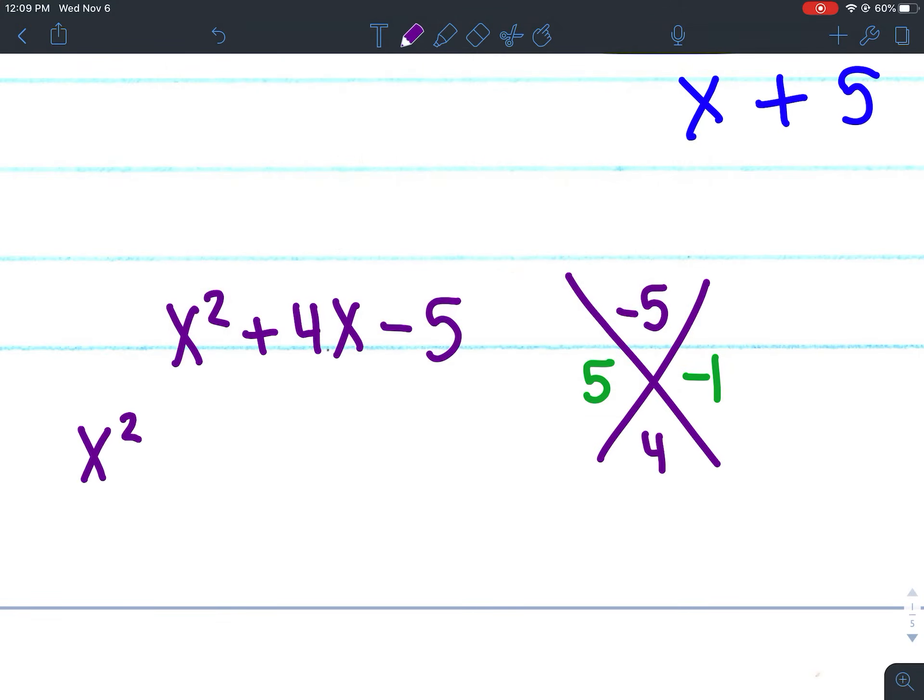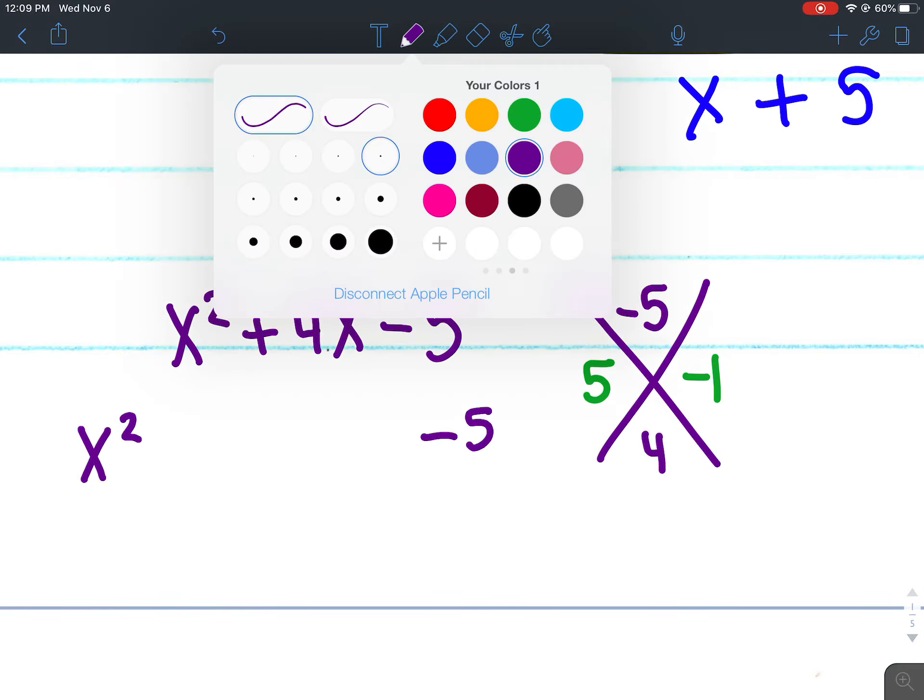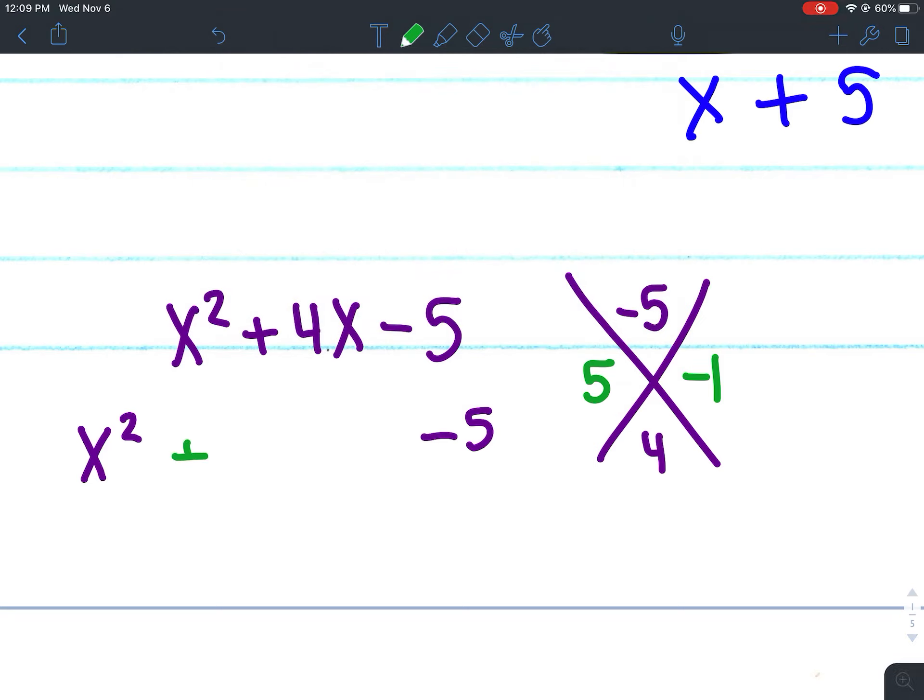Positive 5 plus -1 gives me 4 and 5 times -1 gives me -5. So when I'm factoring, the first and last terms always stay the same. The whole point of us doing the AC method is to get this to 4 terms. So I'm going to go ahead and write this out as 4 terms now.